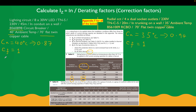Let's calculate IZ for the lighting circuit. IZ equals our IN of 6 amps divided by our correction factors multiplied together: 0.87 × 1. That gives us 6.89 amps, which we round to 7 amps. So our IZ for the lighting circuit is 7 amps.